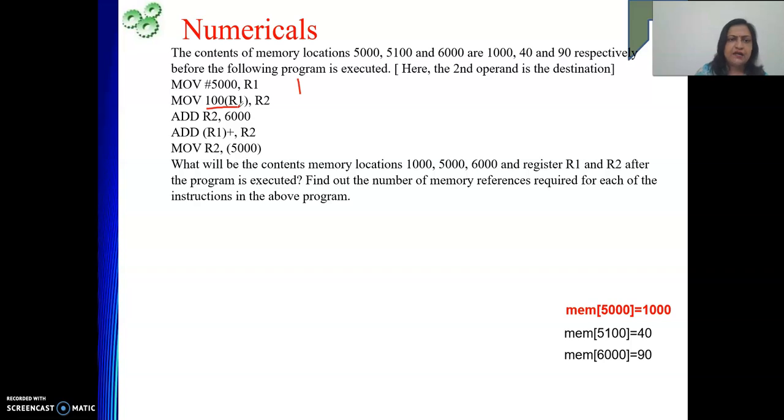Next one is ADD R2, 6000. Here see, 6000 is representing direct addressing mode or absolute addressing mode. In case of direct or absolute addressing mode, your address is part of the instruction. But where is your operand? In the memory. So see here, one is instruction fetch. One to get the operand from the memory location whose address is 6000. And then perform the addition operation.